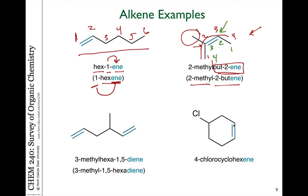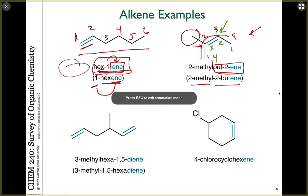Always, double bonds get priority over other substituents when naming molecules in terms of numbering. So you always number an alkene, or an alkyne for that matter, from the side of the chain closest to the end, regardless of where there are other substituents. So the double bond gets precedence. That's indicated by the fact that -ene, or the double bond functionality, is actually part of the parent name, not as a substituent in front — so it gets priority. That's a general rule of thumb that seems to always hold true.